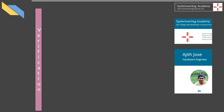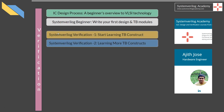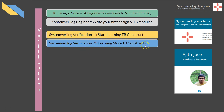These are the courses to learn SV for verification or test bench coding. After building the foundation, you can start with the first two courses titled SystemVerilog Verification 1: Start Learning TB Constructs, and SystemVerilog Verification 2: Learning More TB Constructs. These two courses are free for the time being, and will cover all SV language constructs used for verification coding.